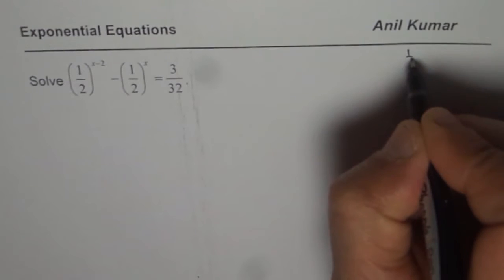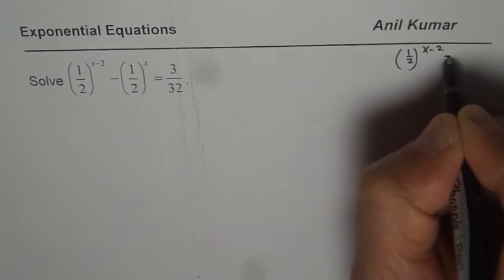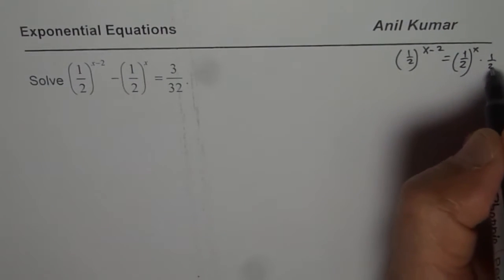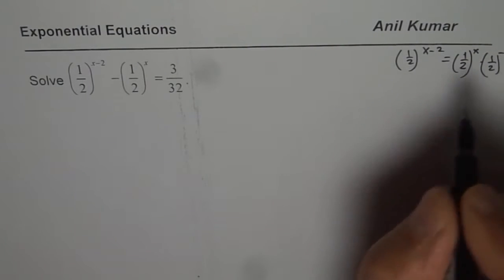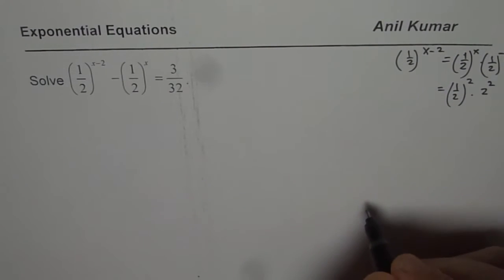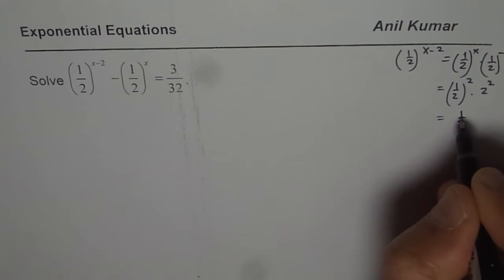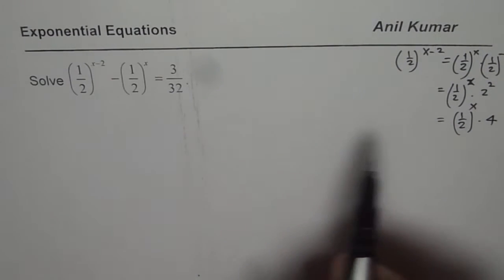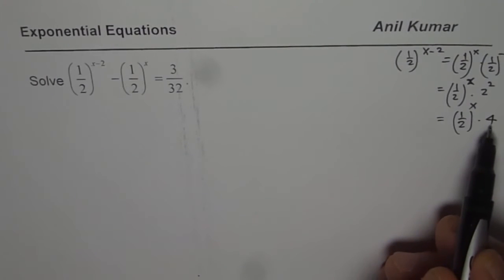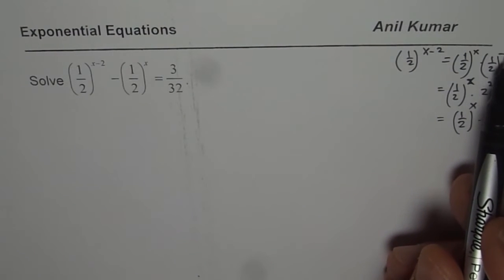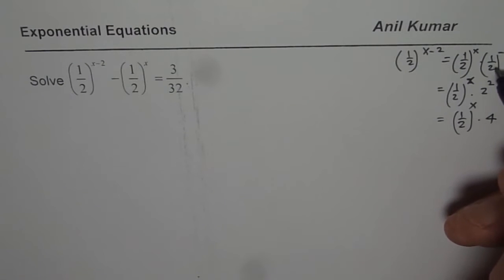Now what do you understand by half to the power of x minus 2? That is important to understand. It really means half to the power of x, divided by half to the power of minus 2. Which you could write as half to the power of x times 2 squared, or half to the power of x times 4. So minus really means that the 2 becomes 1 over 2 and then you square this.